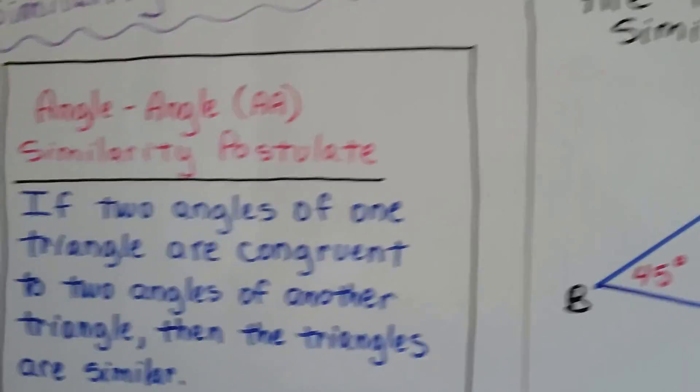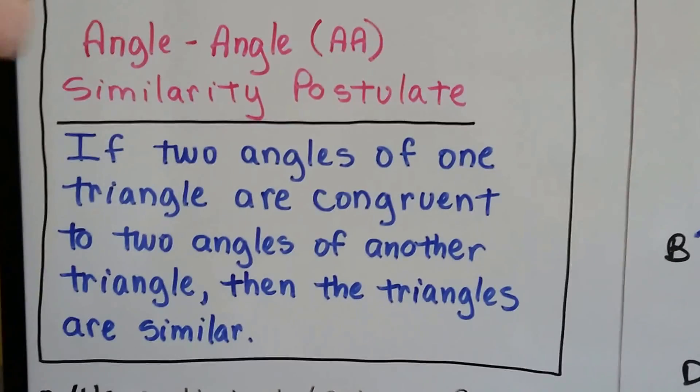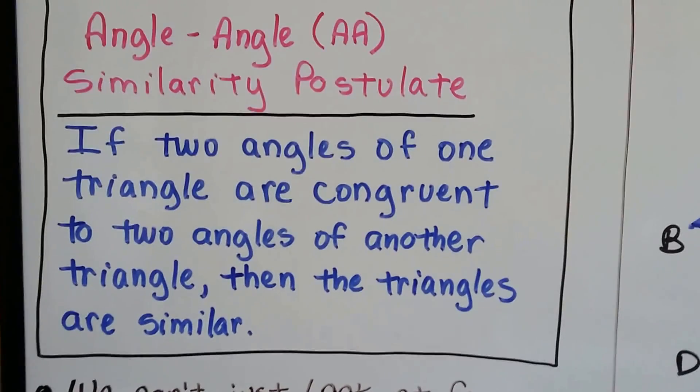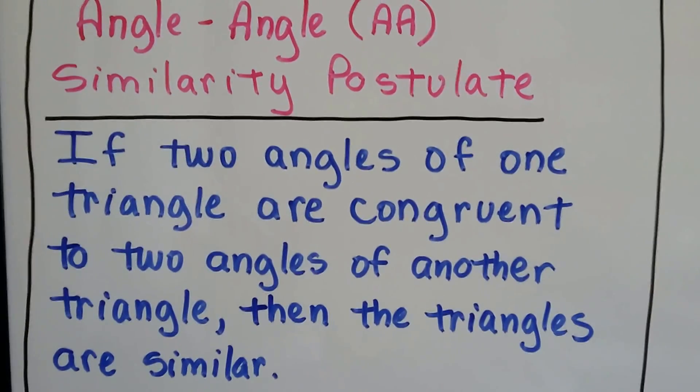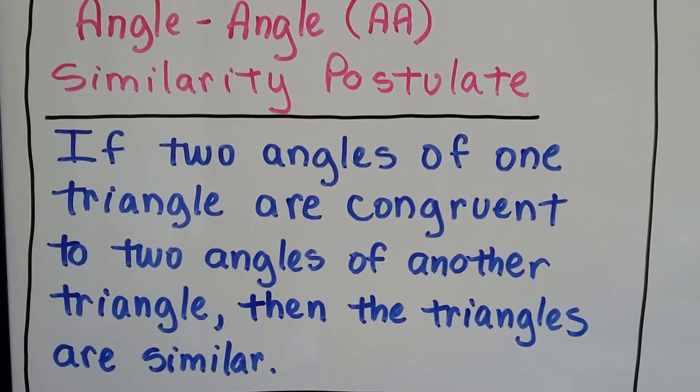Theorems and axioms come from postulates. So here's the angle-angle, or AA, similarity postulate. It says if two angles of one triangle are congruent to two angles of another triangle, then the triangles are similar.